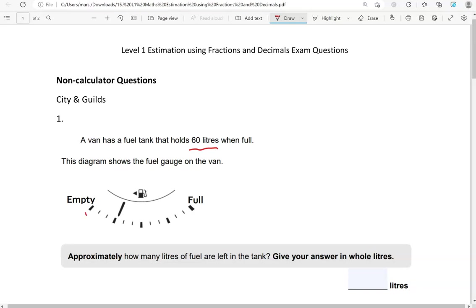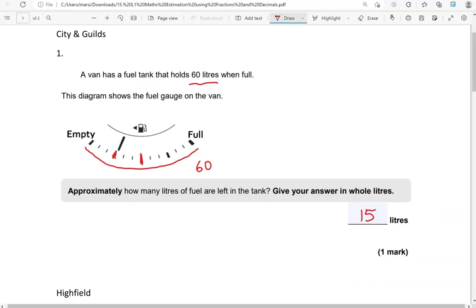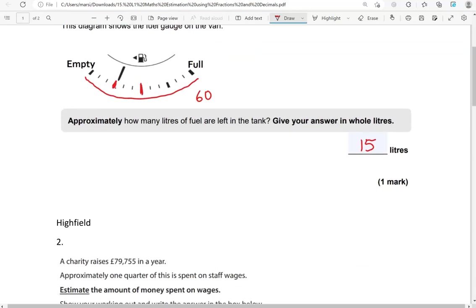So one full, which is from this point to this point, that would be 60 litres. Half of it will be 30. A quarter, which is this point here, that would be 15. So half of 30 is 15, or a quarter of 60 is 15. So this is about a quarter. Again, this is the approximation. It's not the exact number of litres.